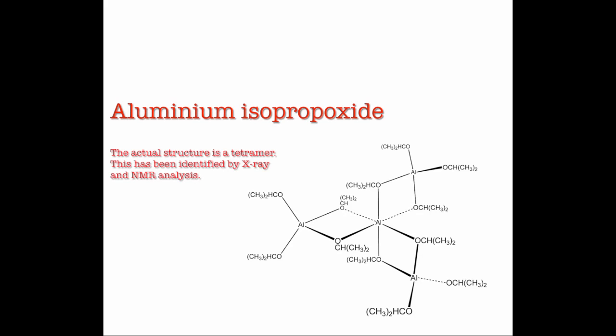This is the Oppenauer Oxidation. The Oppenauer Oxidation uses Aluminum Isopropoxide to oxidise alcohols up into the carbonyl forms.